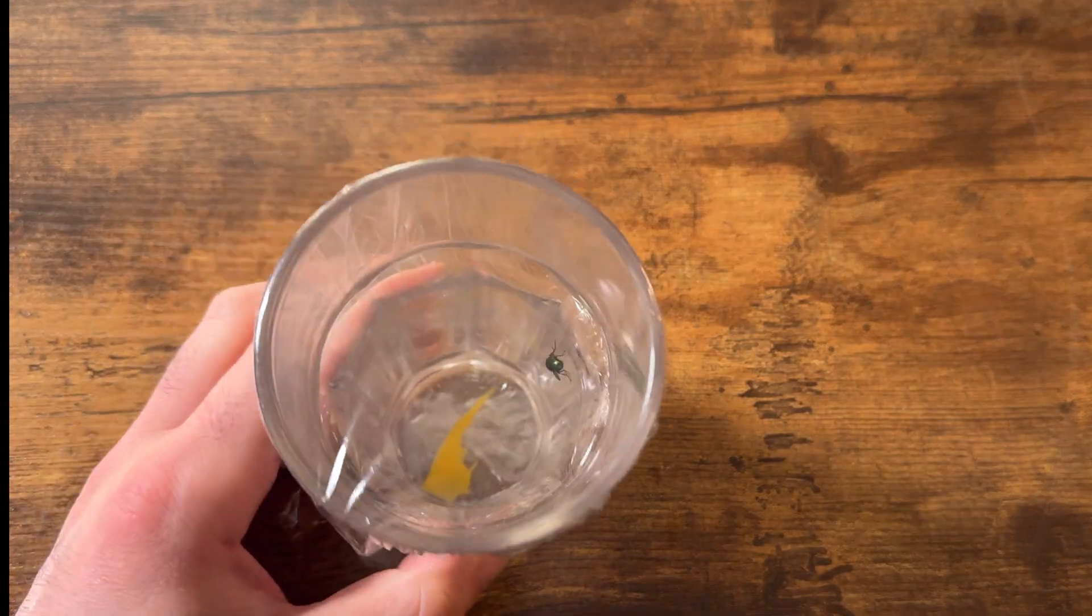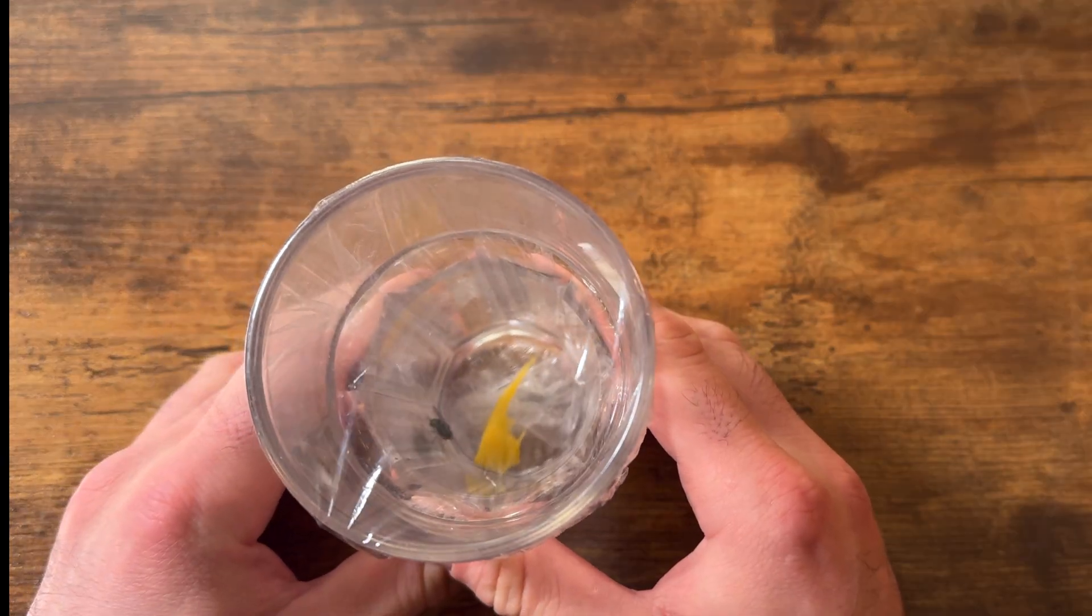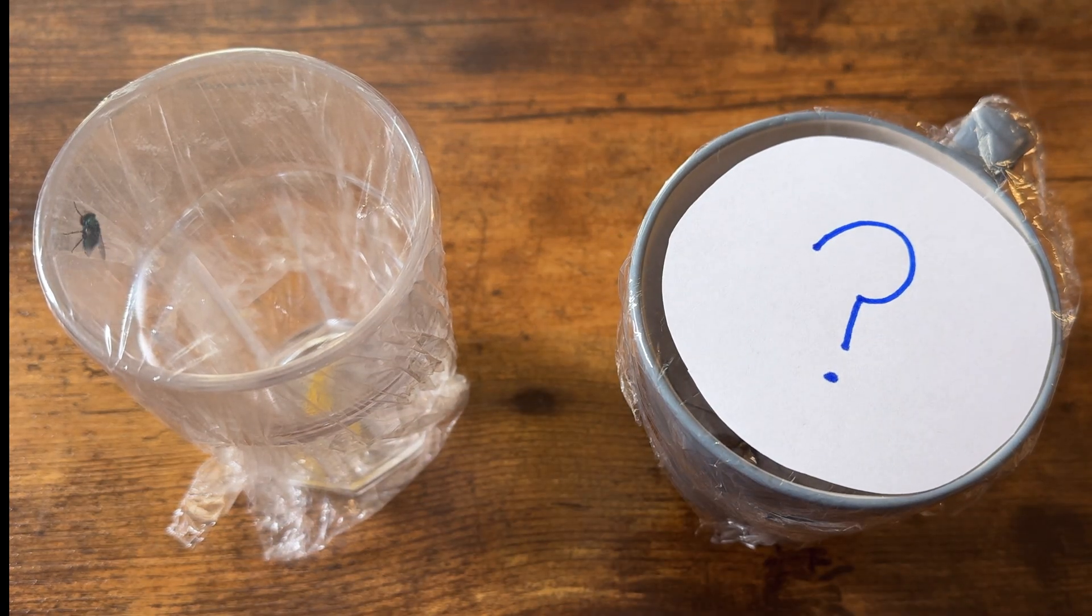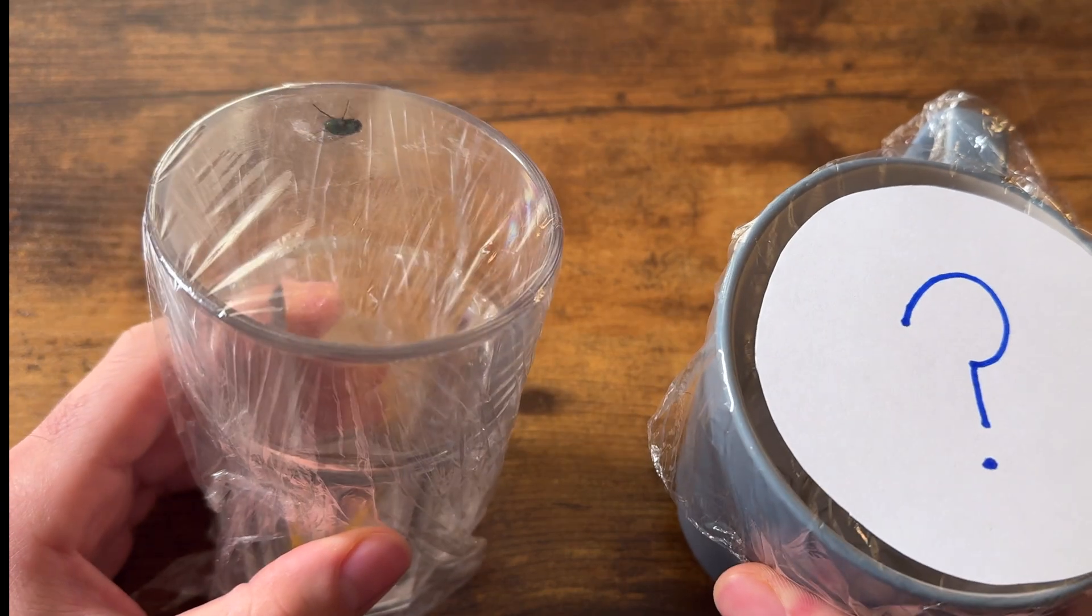Okay, so I have my fly. He's just relaxing eating some mango. I also have a mystery insect that you've probably never even heard of before. I'm gonna try and attach string around both of them. Here's the plan.